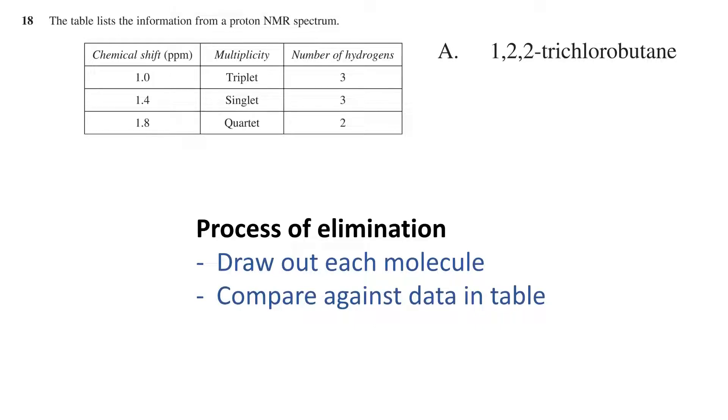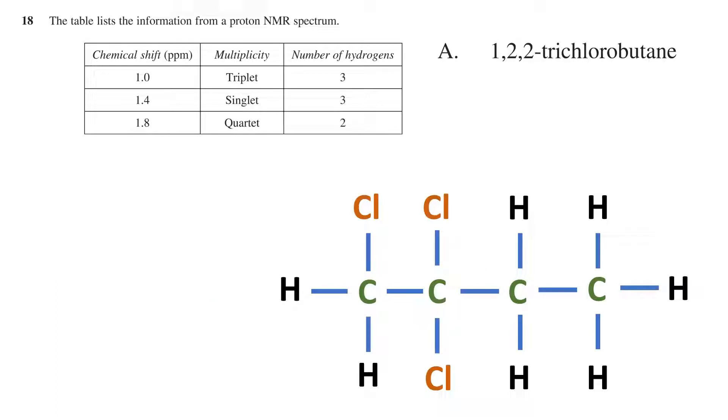Let's start with option A and draw out the structural formula for 1,2,2-trichlorobutane. As we have drawn it here, the carbons are labeled 1 through 4, left to right.